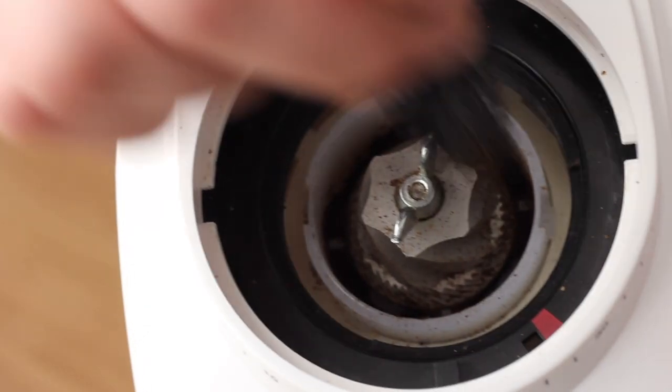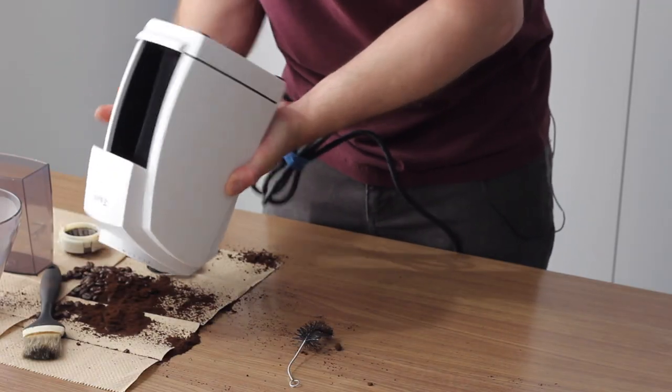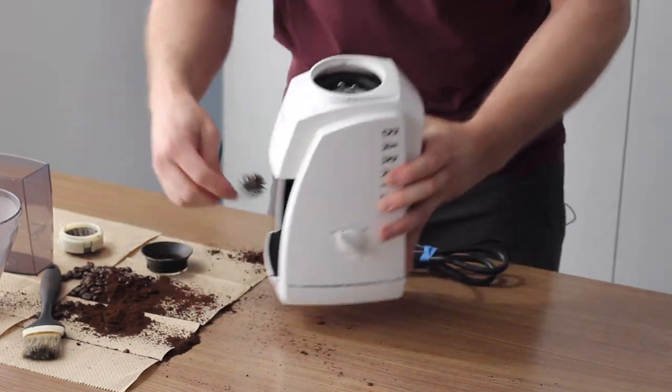Once you have a clear view of the four paddles of the paddle wheel and the bottom of the grind chamber, then you can tip over your grinder and just give it a tap, knock loose some of the grinds.